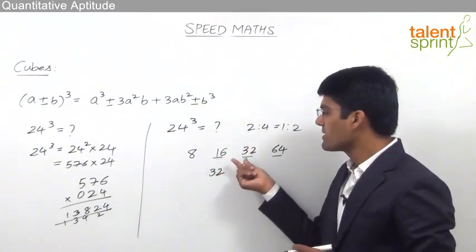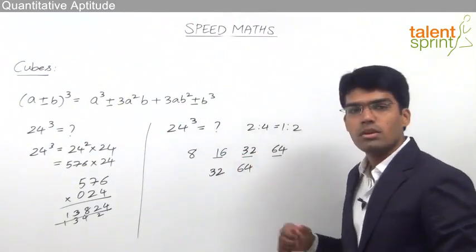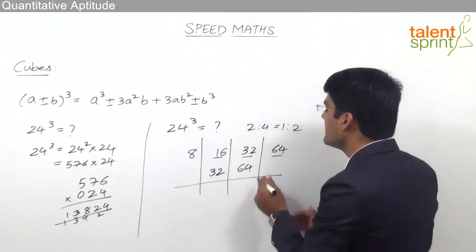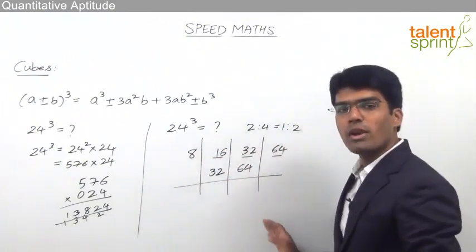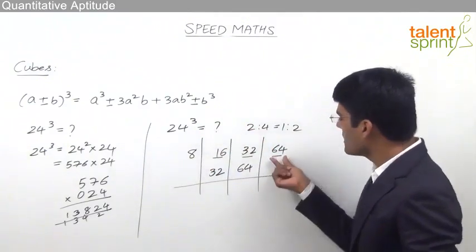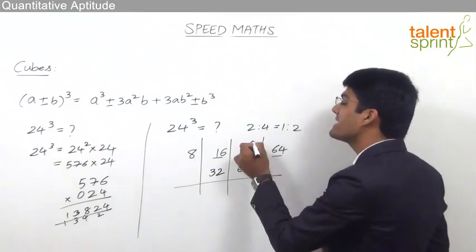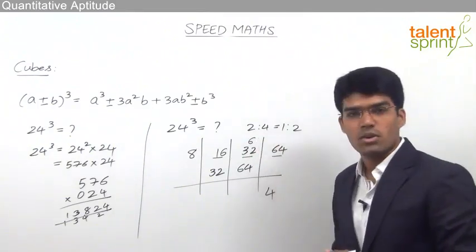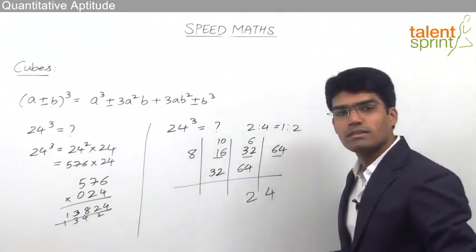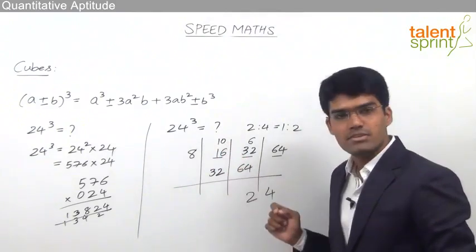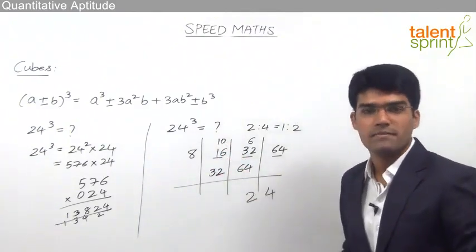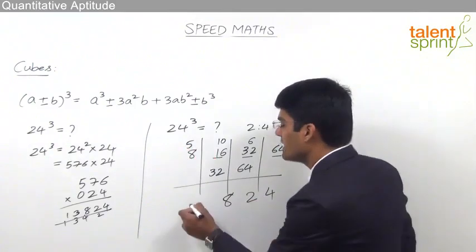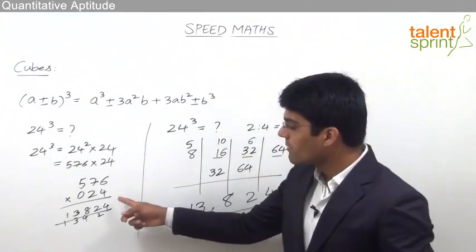Now add the vertical columns, taking only one digit per column with the rest carried forward. The last column has only 64: write 4 and carry 6. Next column: 32 plus 64 is 96, plus carry 6 is 102 — write 2 and carry 10. Third column: 10 plus 16 plus 32 is 58 — write 8 and carry 5. Last column: 5 plus 8 is 13. Final answer: 13824, the same as obtained in the previous method.